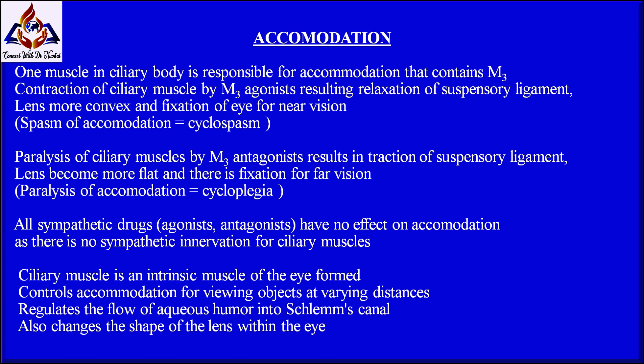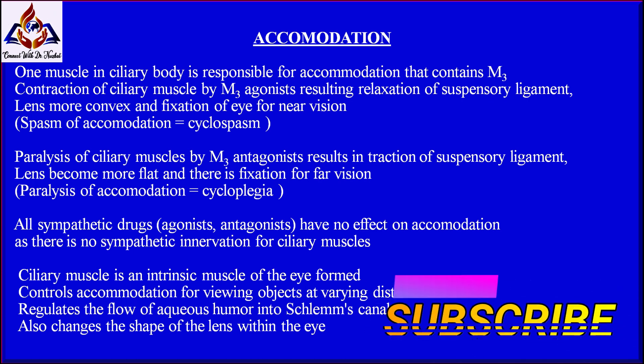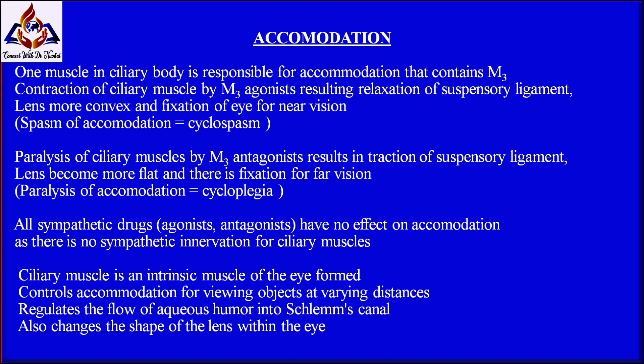One muscle in the ciliary body is responsible for accommodation and contains M3 receptors. Contraction of the ciliary muscle by M3 agonist results in relaxation of suspensory ligaments, making the lens more convex and fixing the eye for near vision — this is spasm of accommodation, also called cyclospasm. Paralysis of ciliary muscles by M3 antagonist results in traction of suspensory ligaments, making the lens more flat and fixing the eye for far vision — this is paralysis of accommodation, also called cycloplegia.